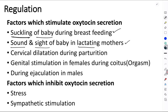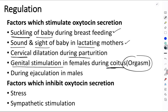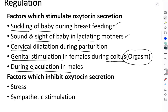Oxytocin secretion is also increased during cervical dilatation, which occurs during parturition or delivery of the baby. It is also increased during genital stimulation in females, especially during coitus, and more importantly when a female attains orgasm. It is also increased during ejaculation in the male.